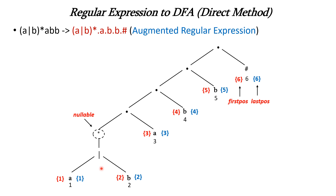Now for the non-leaf nodes: the OR operator's first position is the union of left and right — first position of C1 is {1} and first position of C2 is {2}, so firstpos of OR is {1,2}. Last position of OR is also {1,2}. For the closure operator, firstpos and lastpos carry over from the OR node, so firstpos of closure is {1,2} and lastpos is {1,2}.